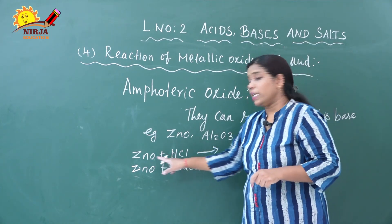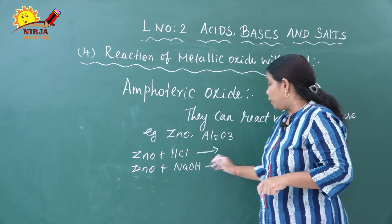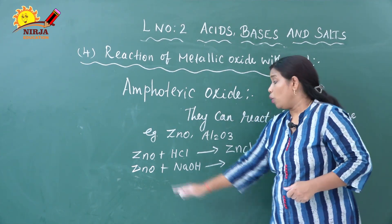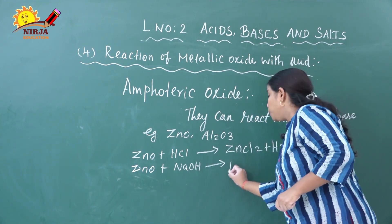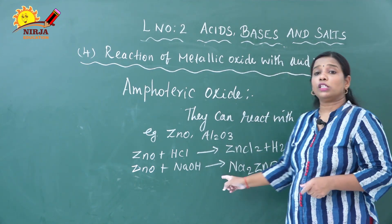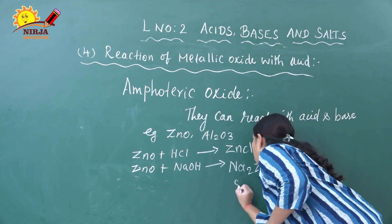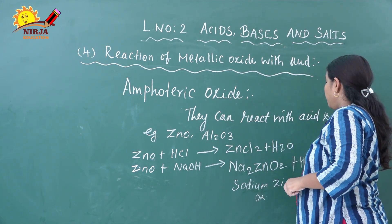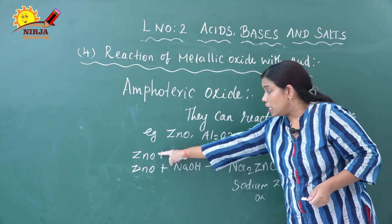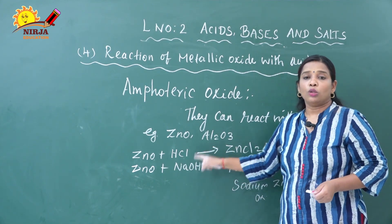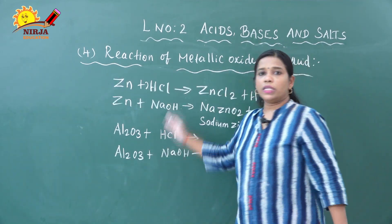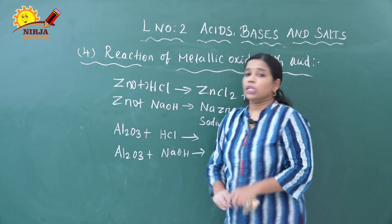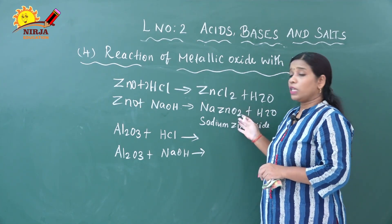Zinc oxide reacts with acid HCl to produce zinc chloride (ZnCl₂) plus H₂O. Similarly, when zinc oxide reacts with sodium hydroxide, it produces sodium zincate plus water. You can see that zinc oxide reacts with acid as well as base — so it is called an amphoteric oxide.